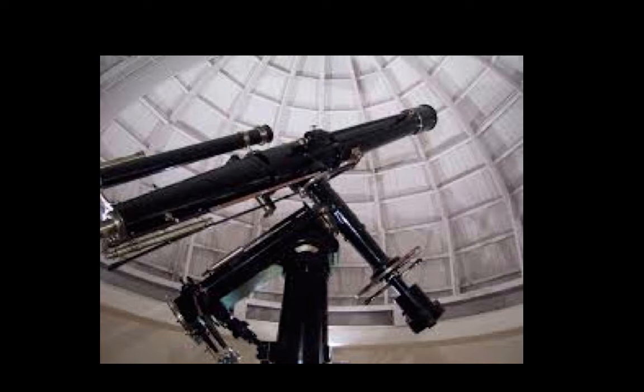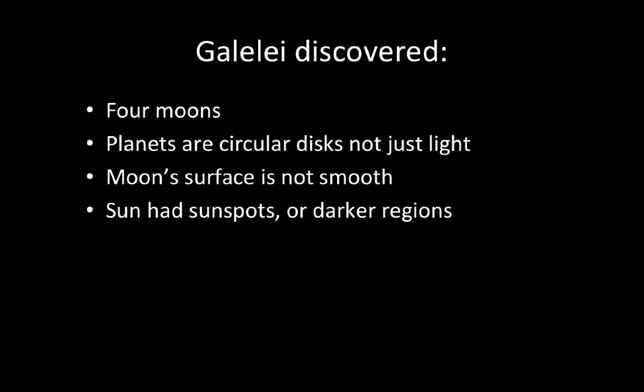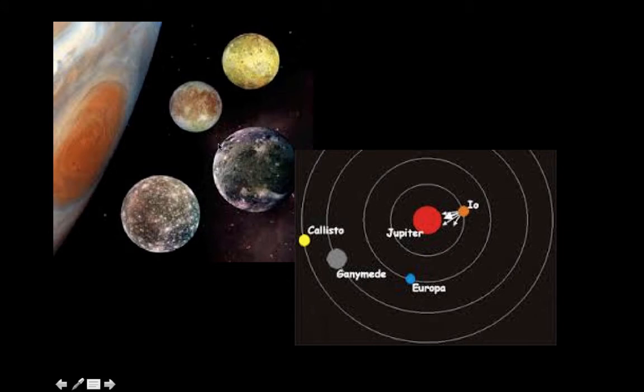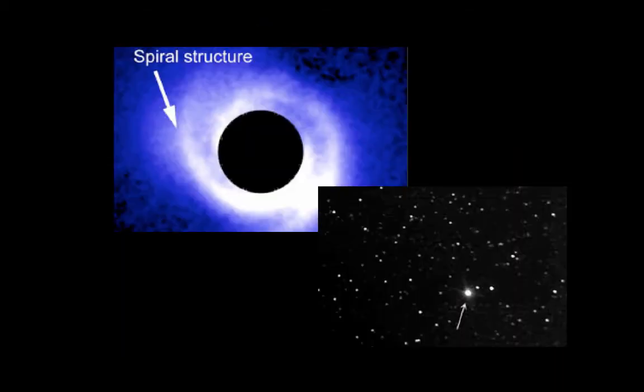He discovered the four moons, or satellites, of Jupiter. He discovered that the planets are not just light. The moon's surface is not smooth, and the sun has sunspots or darker regions. Here's Jupiter's four main moons. He discovered these through looking through his telescope.